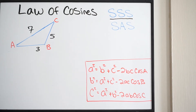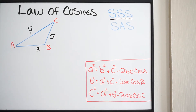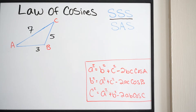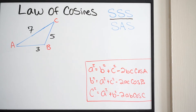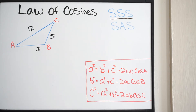One thing you need to remember when using the law of cosines: you always want to try to find the largest angle first. That way the other two angles are acute. We do this because once we find that largest angle, we can go ahead and use the law of sines. If you were not to find the largest angle, it's difficult to use the law of sines because if you're using sine, there's a possibility you could have two answers. For example, sine of 135 degrees and sine of 45 degrees are both going to give you the same answer.